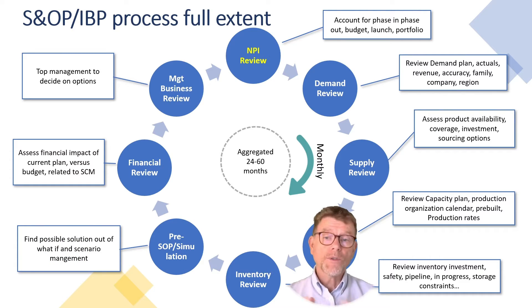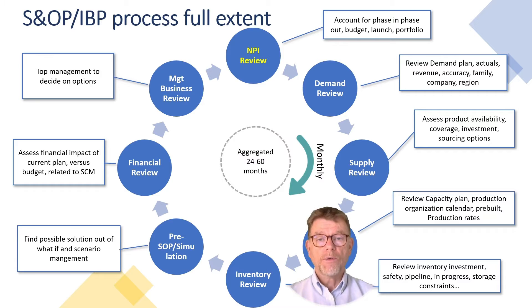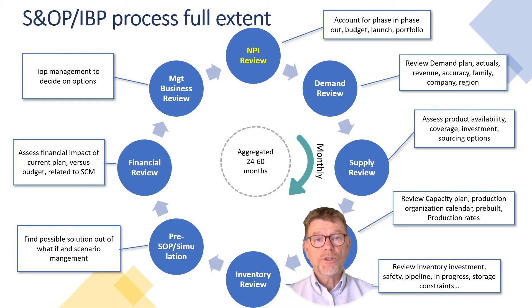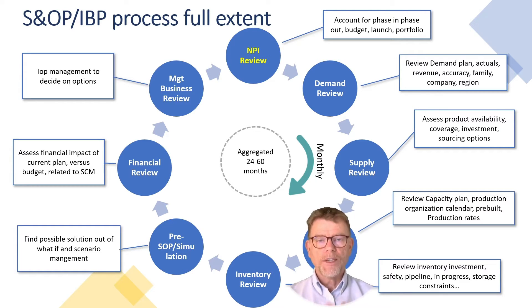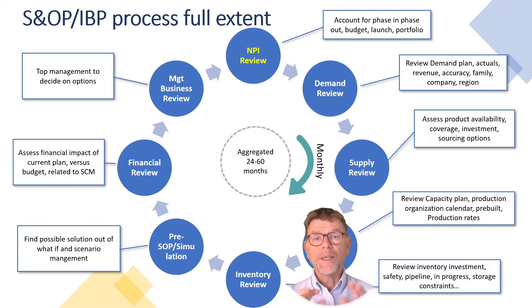Next is pre-SNOP, also named simulation. This step takes into account all the previous steps and tries to find solutions out of what-if scenarios, version management, and possible resolutions. Then we assess the financial impact of demand, supply, capacity, and inventory — the so-called financial review. It's not an accounting review; it's a supply chain step where we want to have the value counterpart from the volumes managed in the other steps. And last but not least, the management business review meeting, where top management decides what to do based on the simulations and decisions that need to be taken.